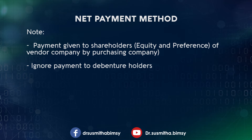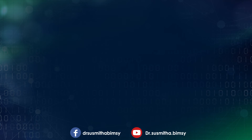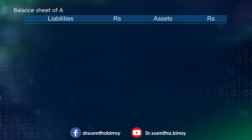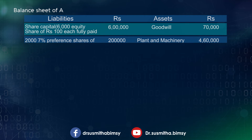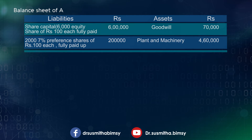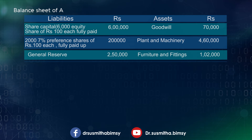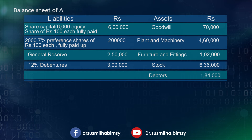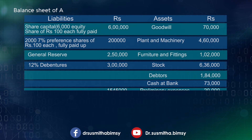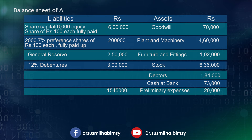Now let us see how to calculate purchase consideration according to the net payment method. See the balance sheet of A Limited. On the liability side: share capital — 6,000 equity shares of ₹100 each, fully paid, ₹6 lakh; 2,000 seven percent preference shares of ₹100 each, fully paid, ₹2 lakh; general reserve ₹2 lakh 50 thousand; 12 percent debentures ₹3 lakh. On the asset side: goodwill ₹70,000; plant and machinery ₹4 lakh 60,000; furniture and fittings ₹1 lakh 2,000; stock ₹6 lakh 36,000; debtors ₹1 lakh 84,000; cash at bank ₹73,000.